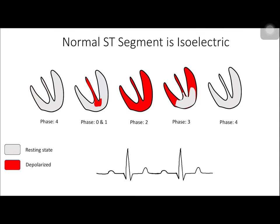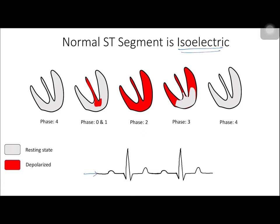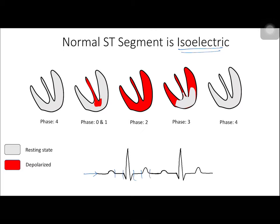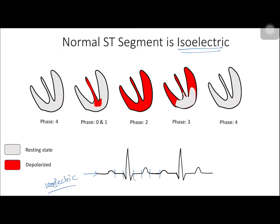Let's start with the normal ST segment. The normal ST segment is isoelectric, meaning the entire myocardium is electrically in the same state. This isoelectric line occurs at the PR interval, ST segment, and TP segment — these are the regions where the segment is supposed to be isoelectric.